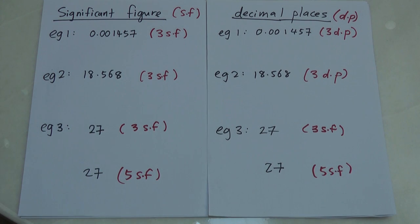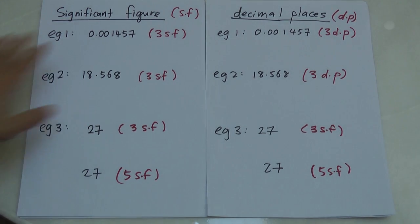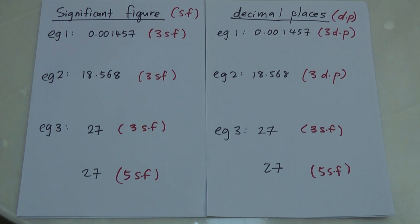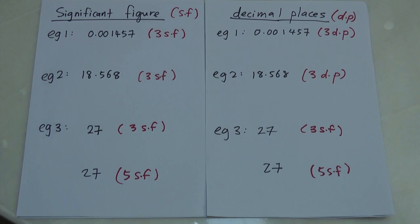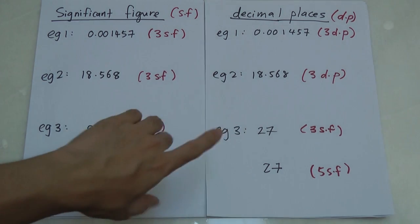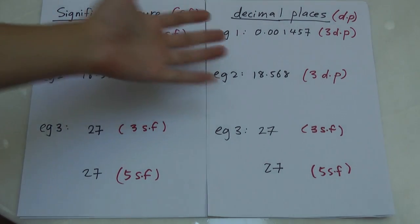In this video, I'm going to explain the difference between significant figures and decimal places, because some students get confused about this. Significant figures you will see in modern math in Form 4 or Form 5, while decimal place you already see during Form 3, Form 2, or Form 1.